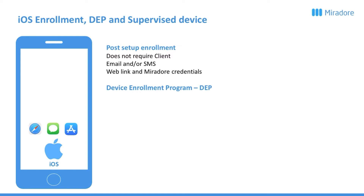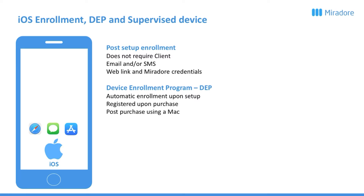Another option is using the Apple Device Enrolment Program, or DEP for short. We have created a separate video on this, so please check out that if you want more information about it. In short, it is about automatically enrolling a device upon setup so you don't have to do it manually. DEP is something which is registered upon purchase of the device, or can be registered post-purchase using a Mac.